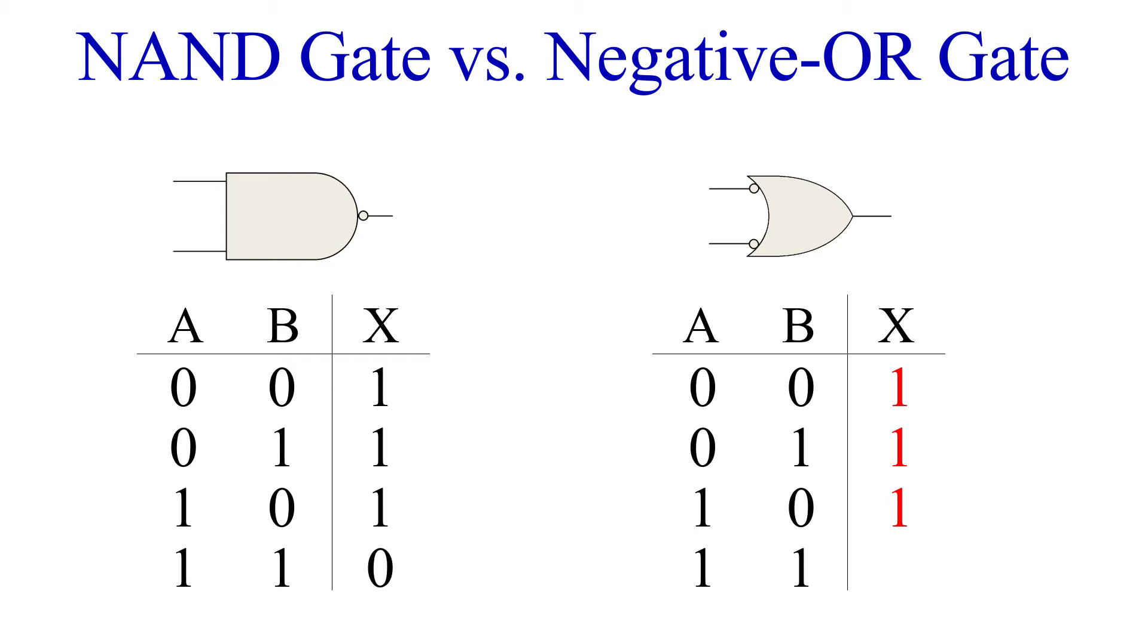Finally, two inputs of 1 get inverted to 0 and 0. OR 0 is 0. So there we go, two identical truth tables.